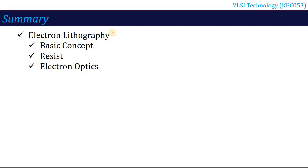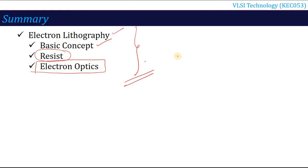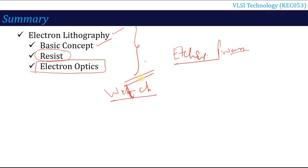After reading this lecture, you should understand electron lithography — the basic concept behind it, the different types of resist (positive and negative), how they break or form, and the electron optics involved. In the next lecture, we will cover the etching process in detail — specifically wet chemical etching, which is used to remove material by dipping in a chemical solution. Stay tuned. Thank you.